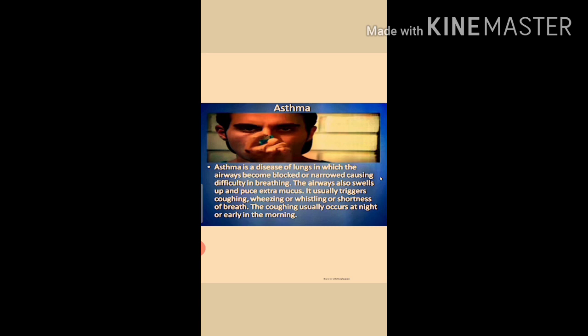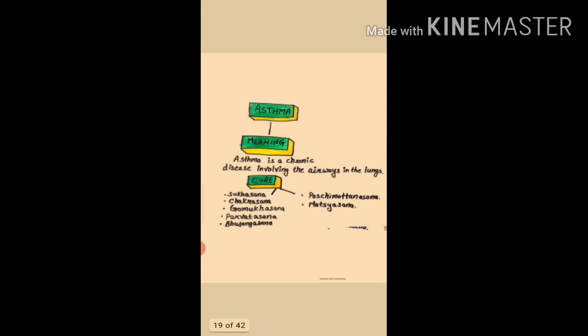Coughing, wheezing, shortness of breath, and chest tightness are classic asthma symptoms. Severe asthma can make it hard to talk or be active and can affect your home life and ability to work. Asthma is a chronic disease involving the airways in the lungs. Asanas to cure asthma include: Sukhasana, Chakrasana, Gomukhasana, Parvatasana, Bhujangasana, Paschimottanasana, and Matsyasana.